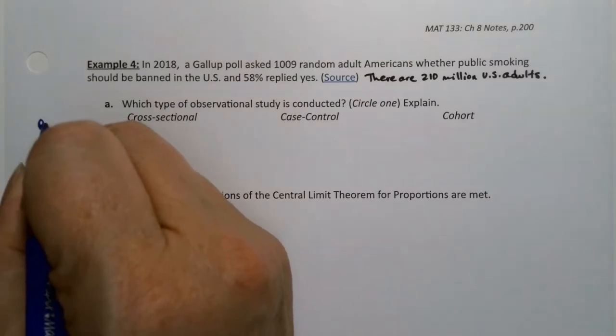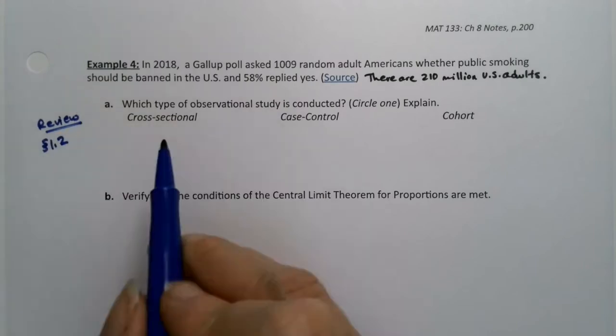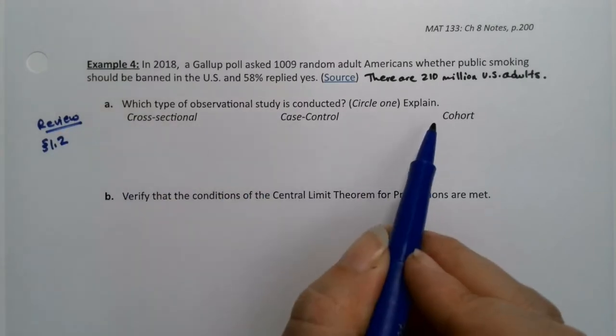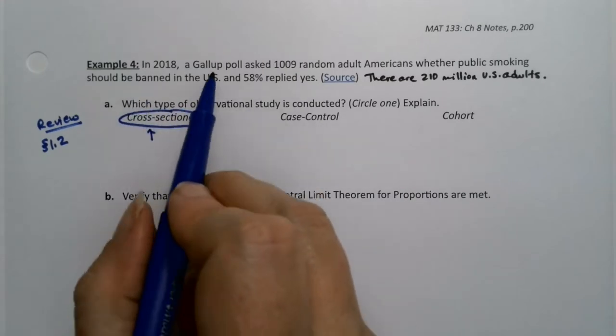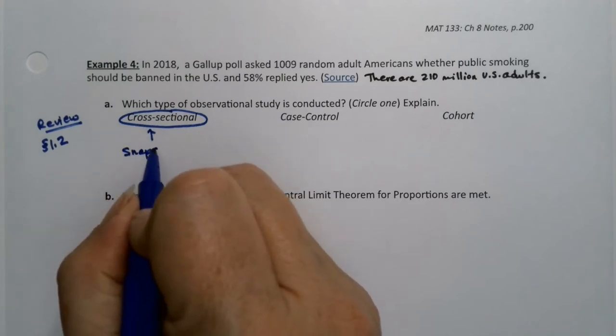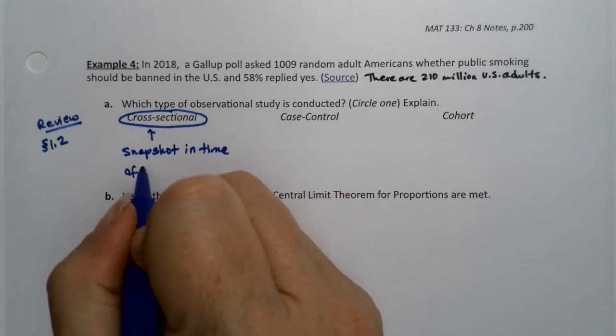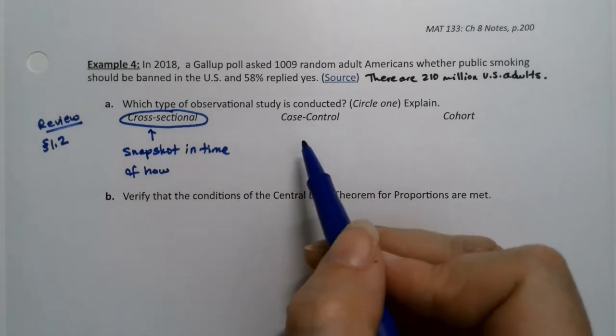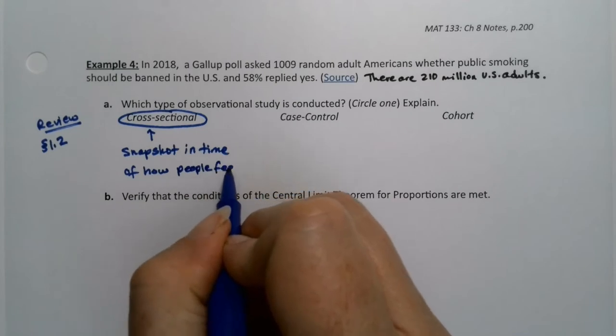This is from section 1.2. Is this a cross-sectional, case control, or cohort observational study? And it is cross-sectional. We're taking a snapshot in time. Most polls like these are cross-sectional of how people feel. Case control would be we compare smokers versus non-smokers, which is not what we did in this particular one.